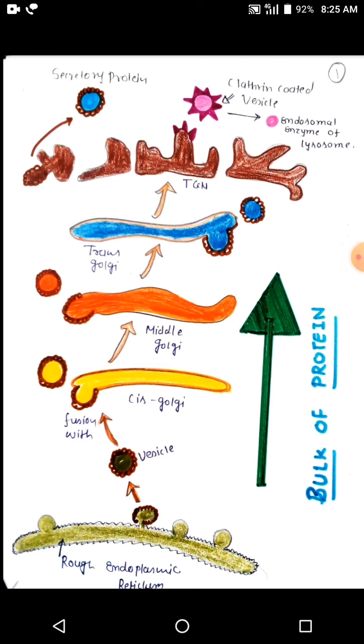Just recall the series. First one is RER to cis-Golgi, cis-Golgi to middle-Golgi, middle to trans, trans to trans-Golgi network.